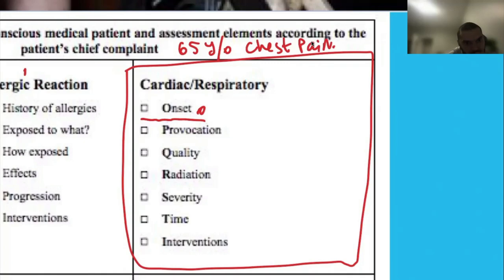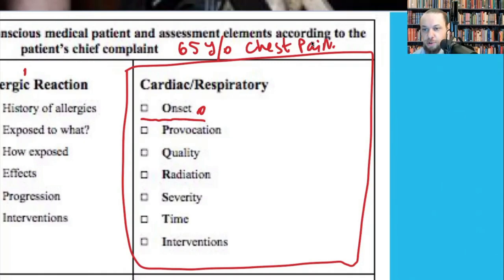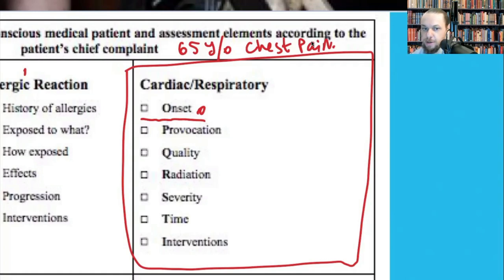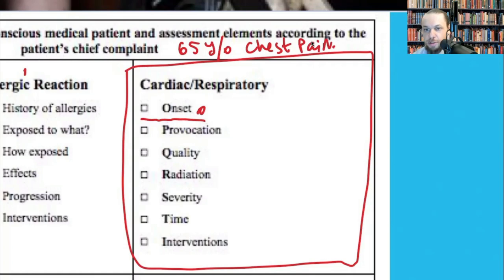Provocation is very important. If they say nothing makes it better or worse, you're immediately thinking ACS. But if they say taking a big breath makes the pain go away when they exhale, or if movement of the arm causes pain that resolves with rest, you start thinking it may not be ACS. Cardiac pain from ACS will not go away with breathing, movement, or positioning — it will be there regardless.